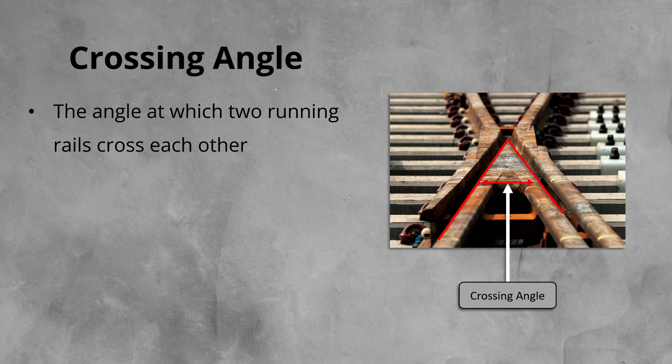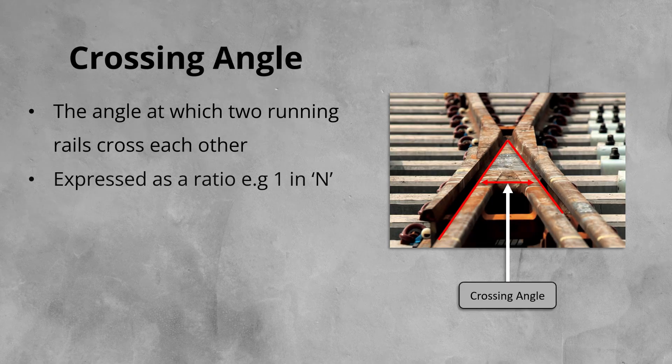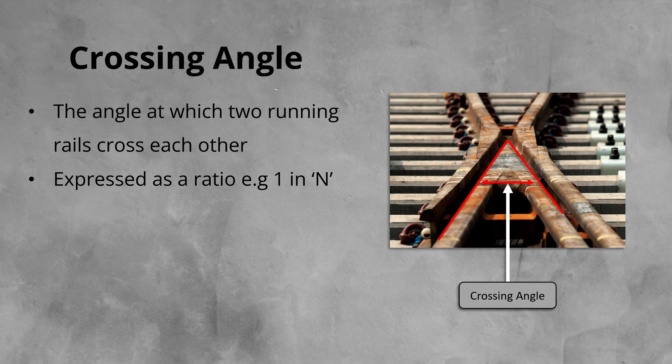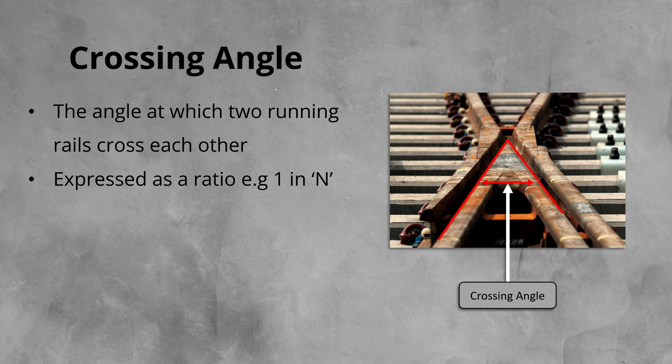Rather than be expressed as an exact angle in degrees, crossing angles are expressed in the form of a ratio, one in n. So for example, a one in eight crossing would have a gap of one meter between the running edges of the rails, eight meters back from the intersection point.